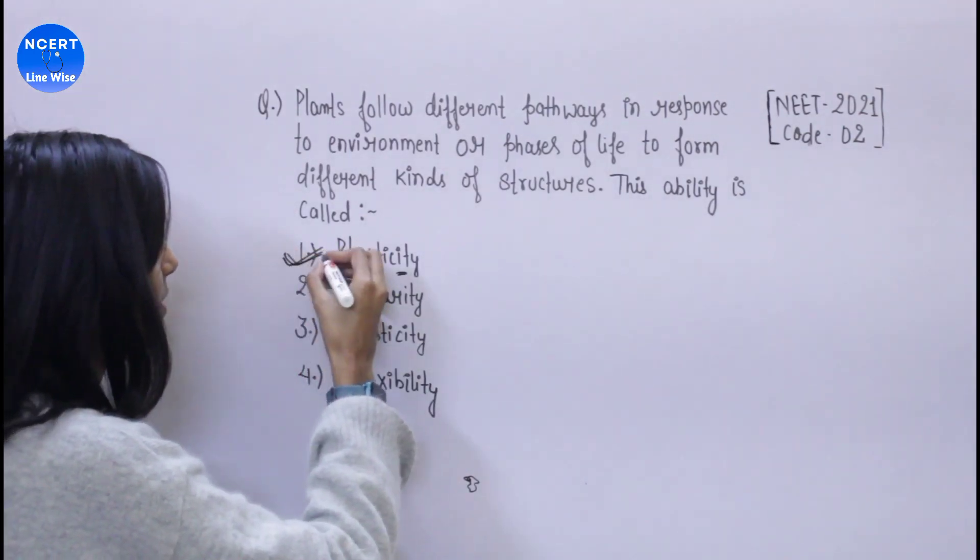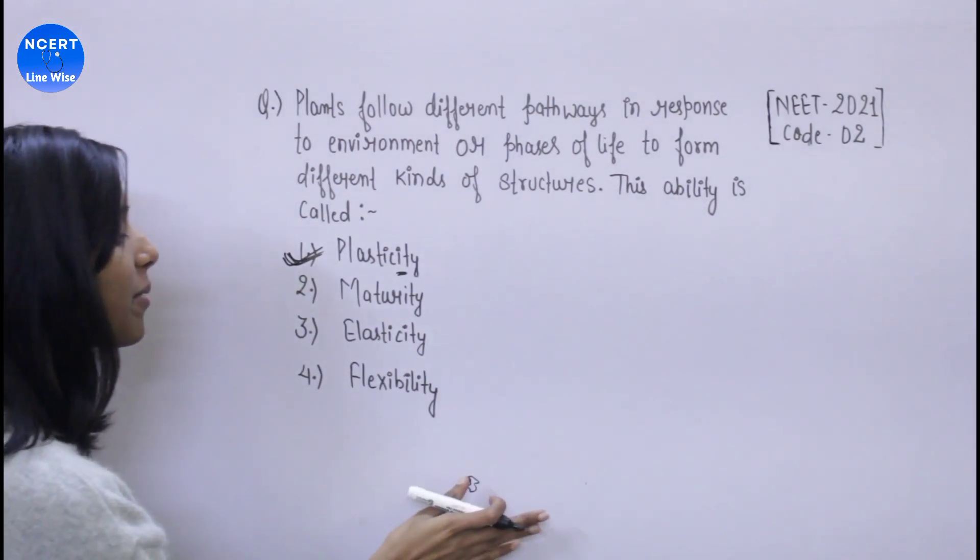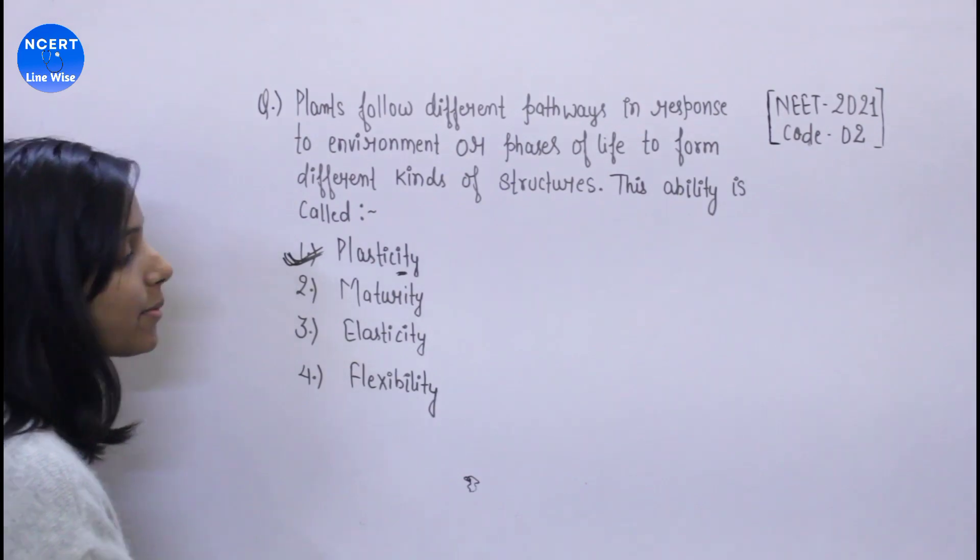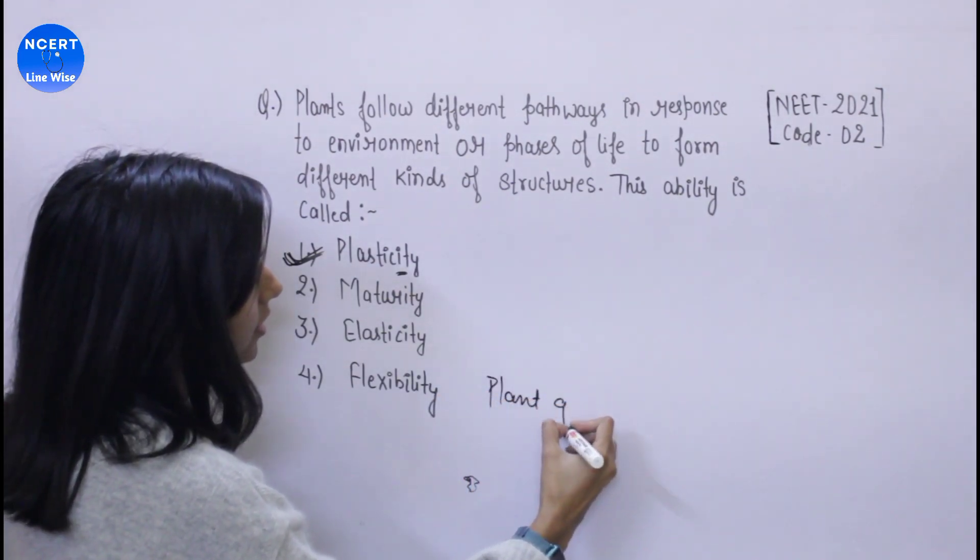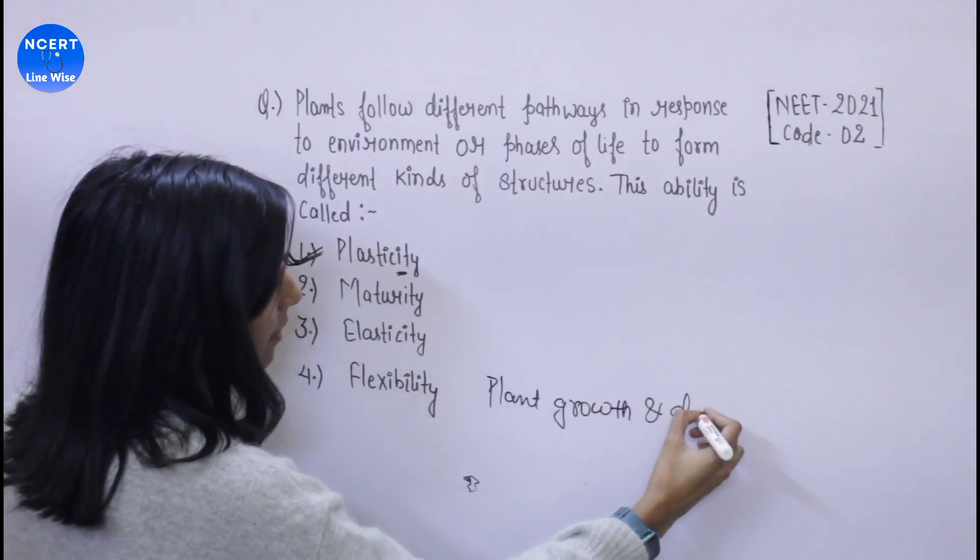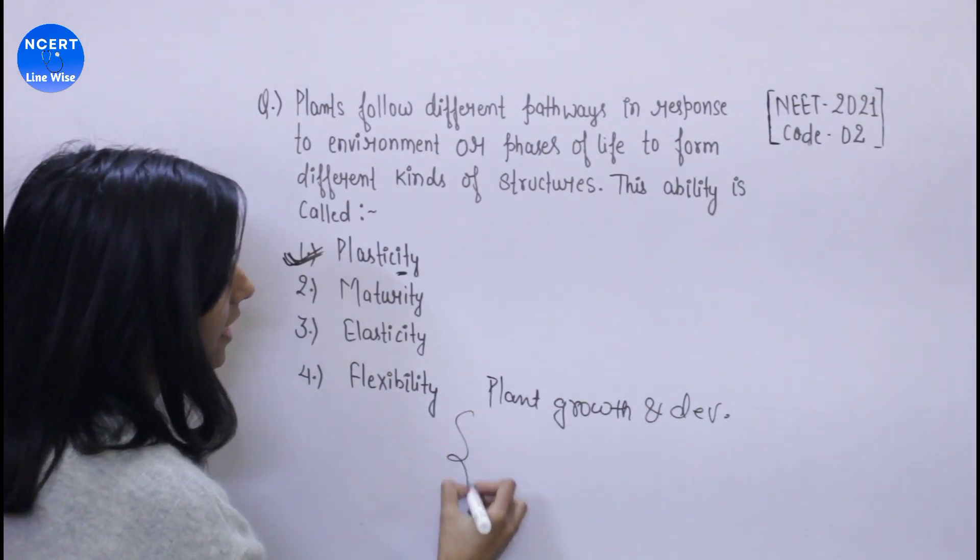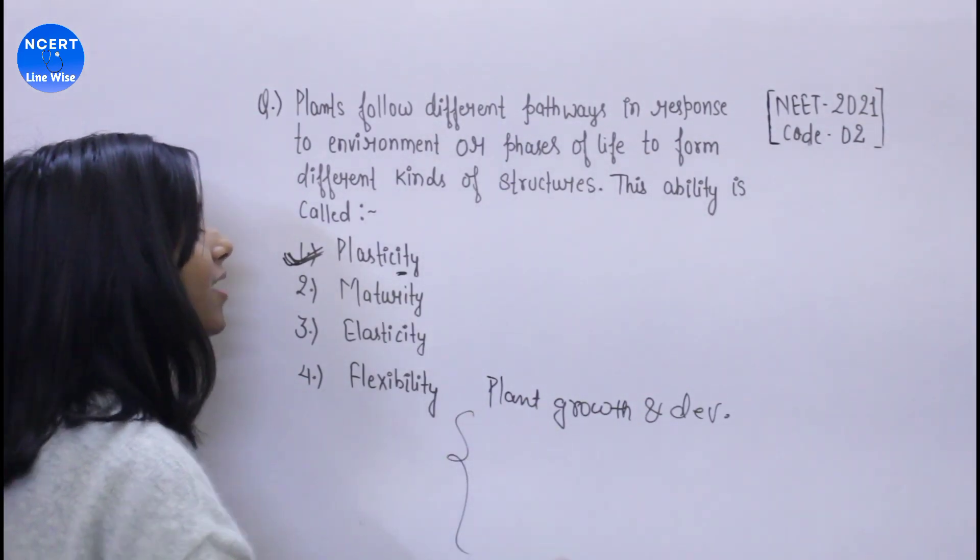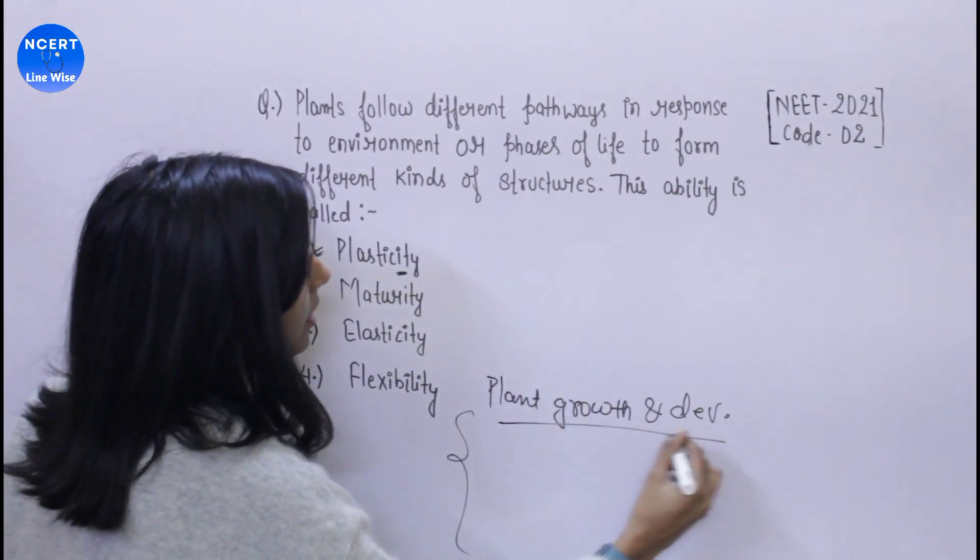So the answer is plasticity. This is a very easy question from plant growth and development, where you have phases of life and different plant structures. As you can see here, it has written...